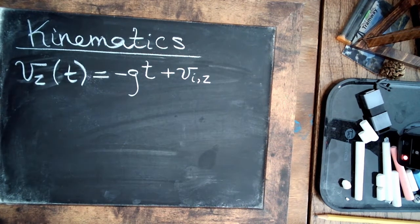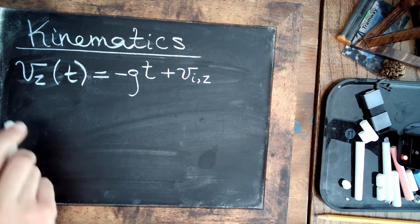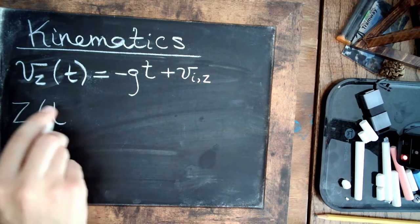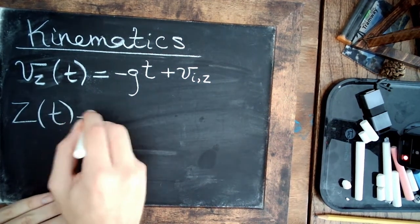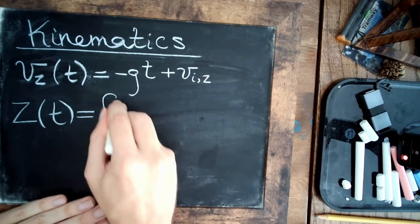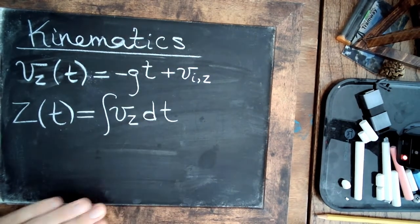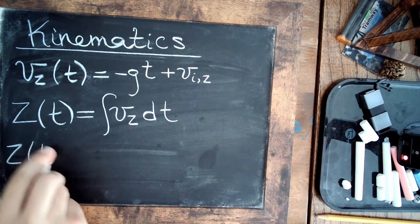So now that we have this velocity in the z direction as a function of time, we could find the position, which I will just call the z itself. So the z coordinate can be found similar to our previous calculation, as simply the integral of the velocity with respect to time. So we just integrate this above expression, and we'll find that z is going to be equal to